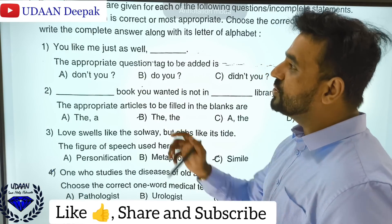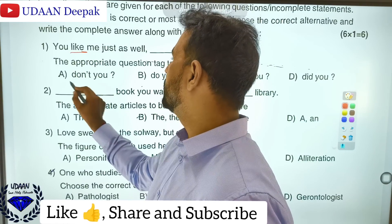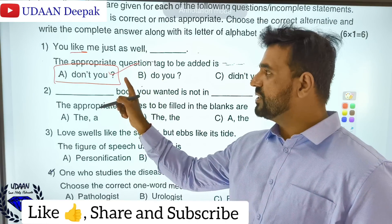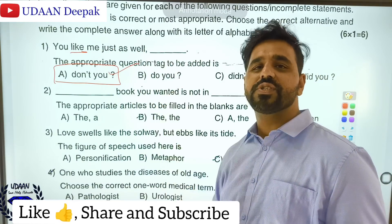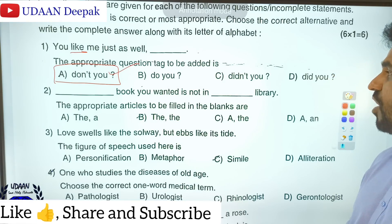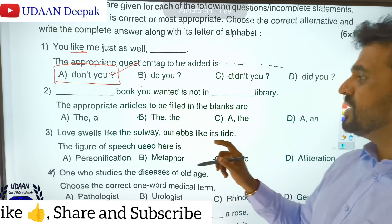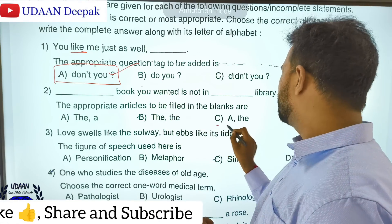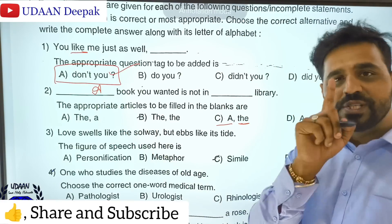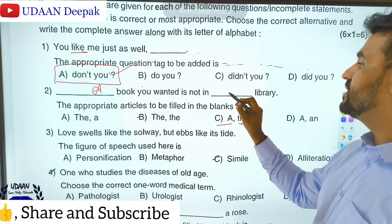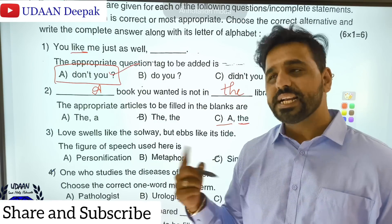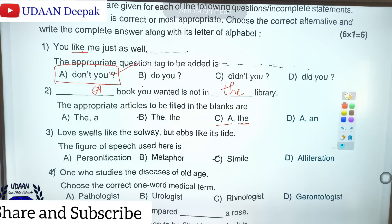You like me just as well. Since it is a positive statement, the answer is 'don't you.' The first answer is a positive question — when you have a positive statement, you should write a negative question tag. The book you wanted is not in the library — since we are not sure about a particular book, it is not definite. So the answer is 'a book you wanted is not in the library.'